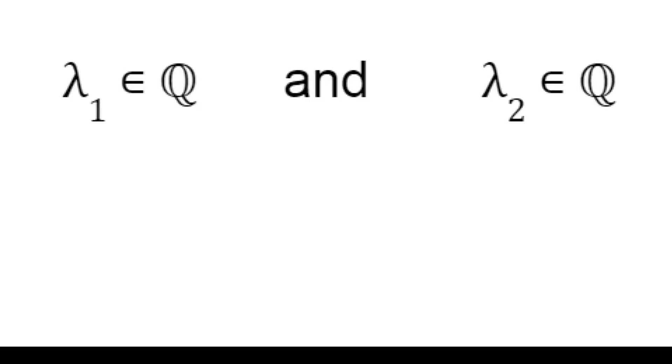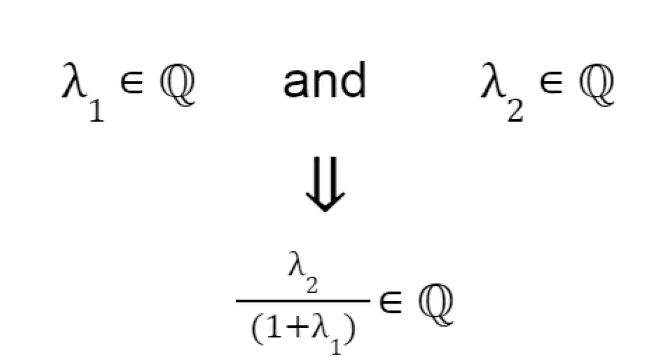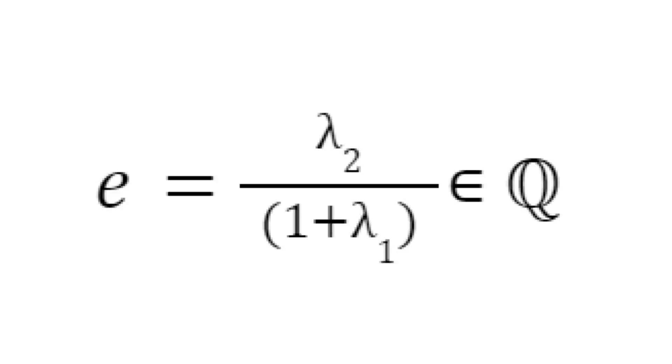And because lambda 2 and lambda 1 are both rational, we can conclude that lambda 2 over 1 plus lambda 1 is also rational, which means that e is rational.